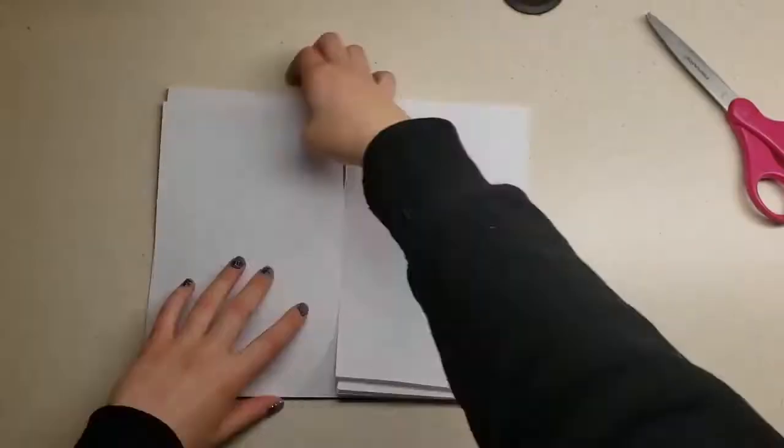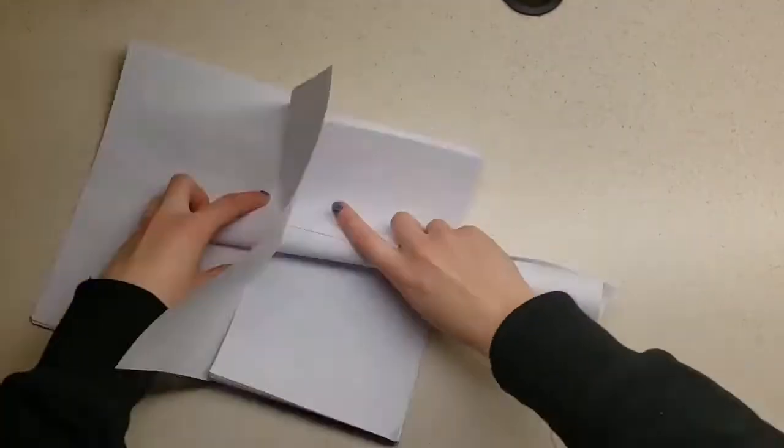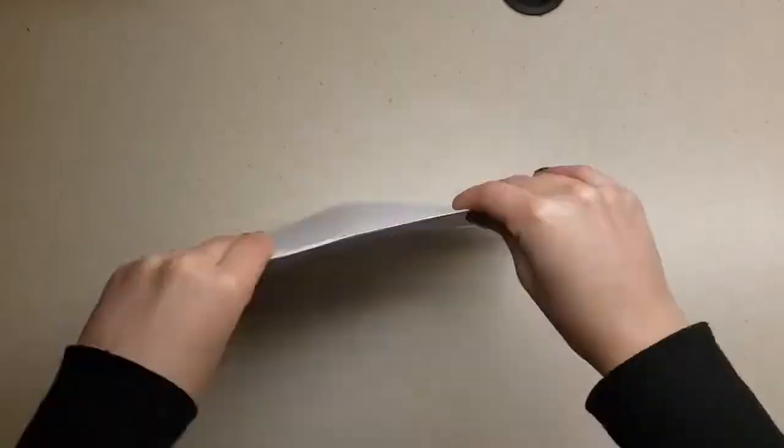I added nine more sheets of paper, so my journal will have 20 pages, but you can add however many sheets of paper you want. When you've added all your sheets, close your journal and crease the spine.